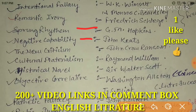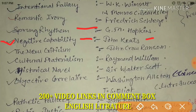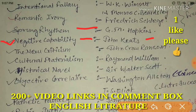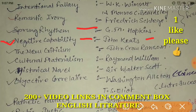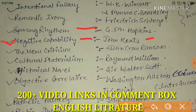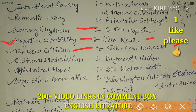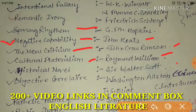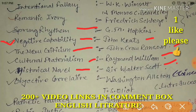'Negative Capability' is by John Keats. If you want to know about it in detail, go to my videos and search 'Negative Capability by Kaushik' or 'Life-Changing Ideas with Kaushik.' 'New Criticism' is by John Crowe Ransom. 'Cultural Materialism' is by Raymond Williams. 'Historical Novel' is by Sir Walter Scott. 'Objective Correlative' was coined by Washington and Elton.